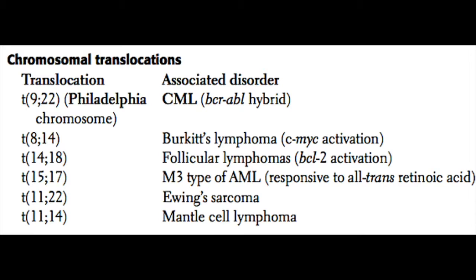The M3 AML is also the kind where you're likely to see Auer rods. Chromosomal translocation 11 to 22 is famous for Ewing's sarcoma, which is a tumor of the musculoskeletal system.